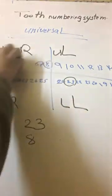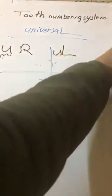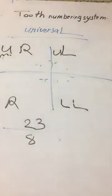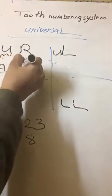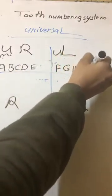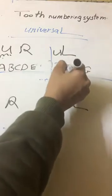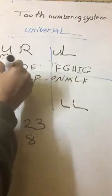Let's go to the primary one, primary teeth. It makes letters from A till T. The same from the upper second molar, upper right side. And it starts with A, B, C, D, E, F, G, H, I, J, K, L, M, N, O, P, Q, R, S, T. This is primary.